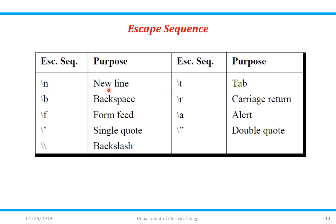Escape sequences used in printf: \n is used for a new line — to print a sentence on a new line, use \n in printf. \b is backspace. \f is form feed. \' is for displaying a single quote. \\ is for a backslash. \t is for a tab. \r is for carriage return. \a is for alert, and \" is for a double quote.